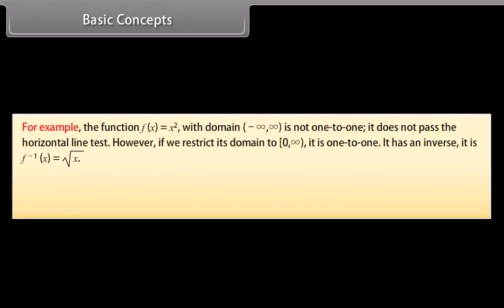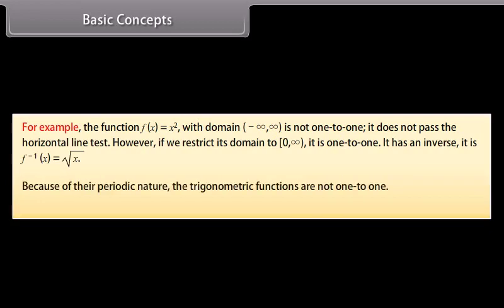For example, the function f(x) = x² with domain (−∞, ∞) is not one-to-one; it does not pass the horizontal line test. However, if we restrict its domain to [0, ∞), it is one-to-one and has an inverse: f⁻¹(x) = √x. Because of their periodic nature, the trigonometric functions are not one-to-one.